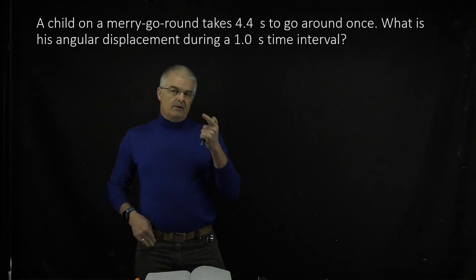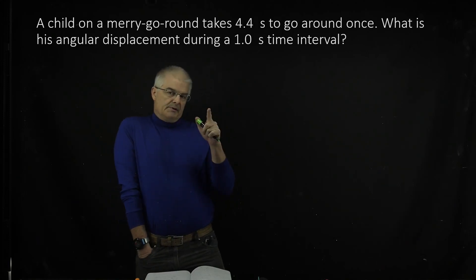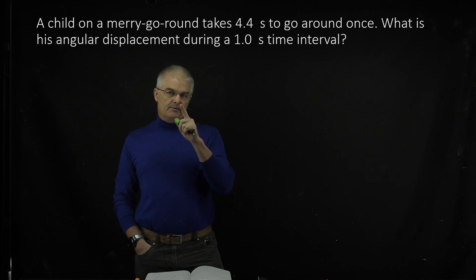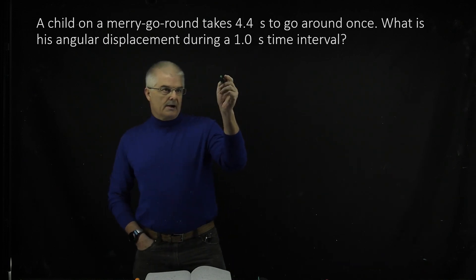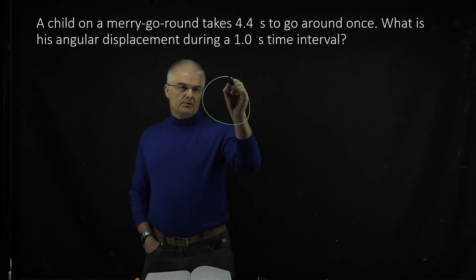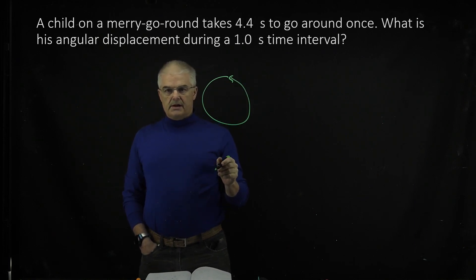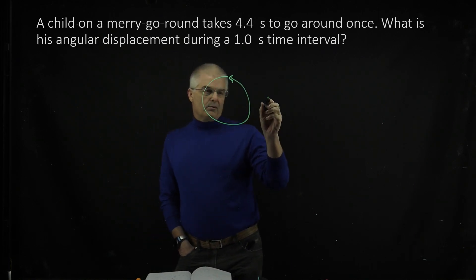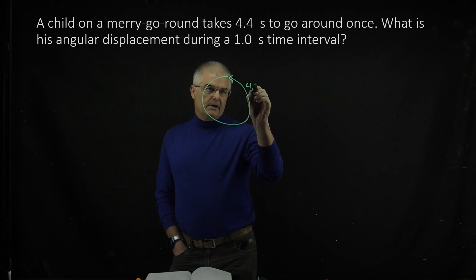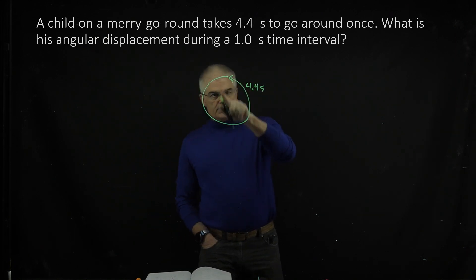This question is asking what is the angular displacement during a one-second time interval. A child on a merry-go-round, so we've got a merry-go-round, circular motion, takes 4.4 seconds to go around one circle.